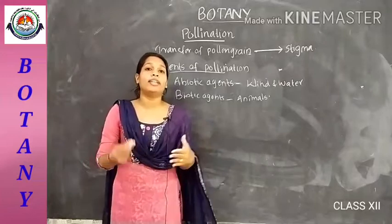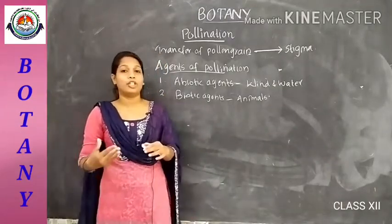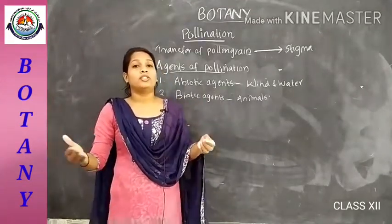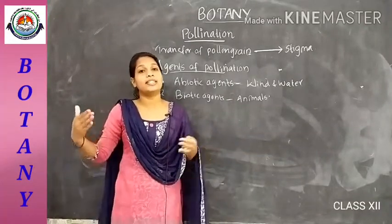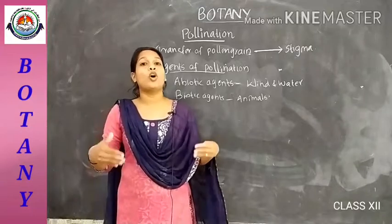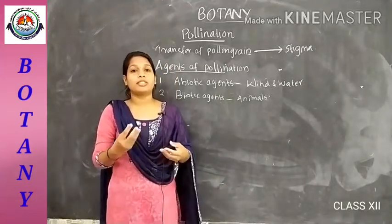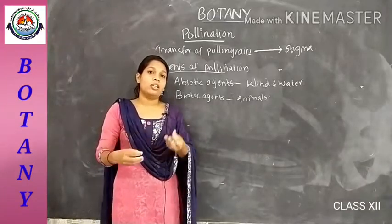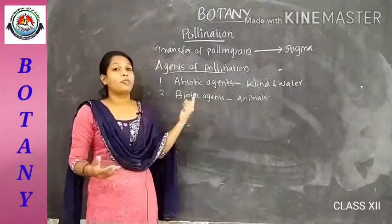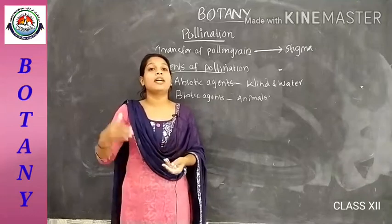Pollen grains are produced in enormous quantity. The pollen grains are produced in enormous quantity because it is easy for wind and water to carry them away, so there is a high chance of loss. In order to avoid this, pollen grains are produced in enormous quantity. The ovule is protected within the female reproductive structure and within the floral parts, so it is not exposed to wind and water. But pollen grains are exposed, so the chances of loss are high. That is why pollen grains are produced in enormous quantity.